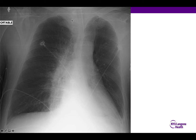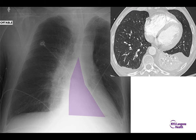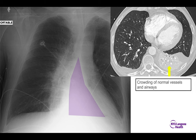Different patient — there's an endotracheal tube, so we know the patient's on a ventilator in the ICU. Drawing attention to the cardiac silhouette, there's a triangular space that's a little denser than the rest — this is left lower lobe atelectasis. When lower lobes collapse, they tend to fold inward, assuming a triangular shape — you may hear this described as a sail sign. The corresponding CT shows the left lower lobe is smaller than normal, with crowding of normal vessels and normal airways as that lobe collapses down.